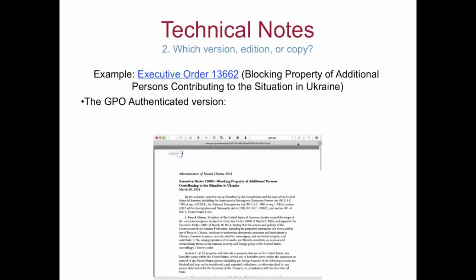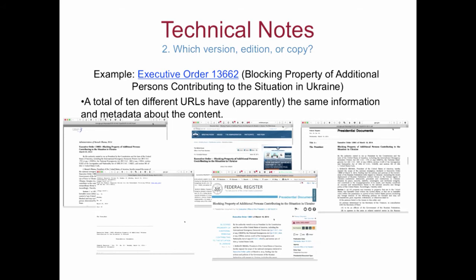Technical note number two is the issue of which version, edition, or copy we select. The example I've chosen is executive order number 13662 about blocking property of additional persons considering the situation in Ukraine. One obvious first choice would be the GPO authenticated version in FDCIS. But there are many other versions on the web. I found 10 different URLs apparently having the same executive order, including the White House copy, the Federal Register site copy, the Federal Register printer-friendly copy, the GPO Federal Register PDF version, the GPO Federal Register HTML version, and GPO's HTML version.